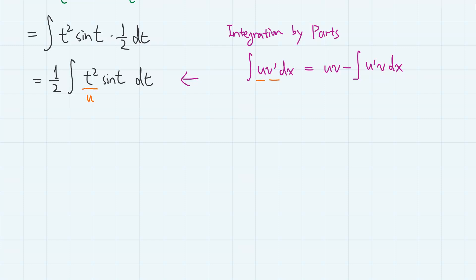Letting t squared as u and sine t as v prime. Then we have u prime as 2t, and v as minus cosine t.